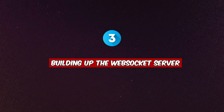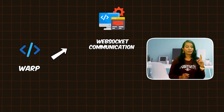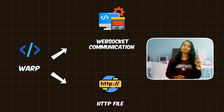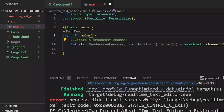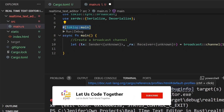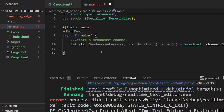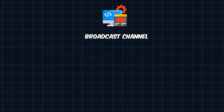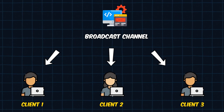Step number three: Building up the WebSocket server. Here we set up a WebSocket server using two routes — one for WebSocket communication and one for static HTTP files. The main function starts with the Tokio main attribute, making it an asynchronous main function. First, we create a broadcast channel to handle document changes and broadcast to all clients.